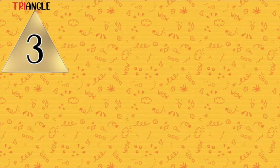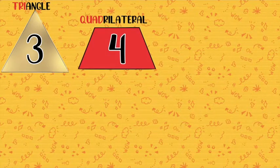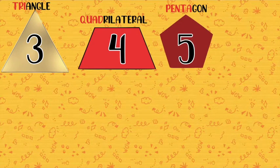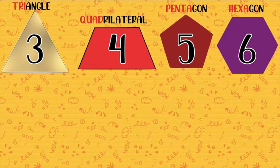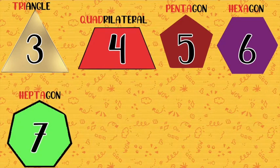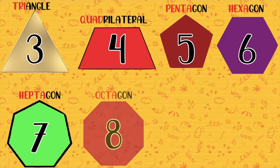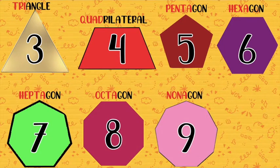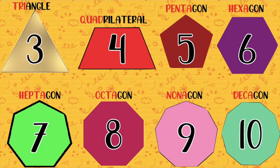The triangle has three sides and three vertices. The quadrilateral has four sides and four vertices. The pentagon has five sides. Hexagon, six sides. Heptagon, seven sides. Octagon, eight sides. Nonagon, nine sides. And lastly, we have decagon, ten sides.